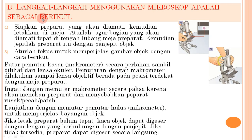Keempat, siapkan preparat yang akan diamati, letakkan di meja, atur agar bagian yang diamati tepat di tengah lubang meja preparat, lalu jepit preparat dengan penjepit objek. Kelima, atur fokus untuk memperjelas gambar objek: putar pemutar kasar (makrometer) secara perlahan sambil dilihat dari lensa okuler sampai lensa objektif berada pada posisi terdekat dengan meja preparat. Jangan memutar makrometer secara paksa karena akan merusak preparat. Lanjutkan dengan memutar pemutar halus (mikrometer) untuk memperjelas bayangan.